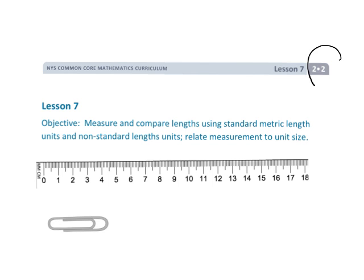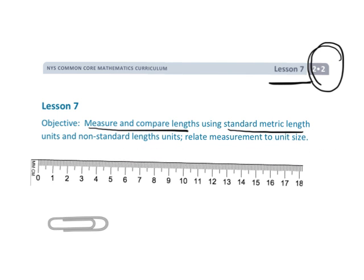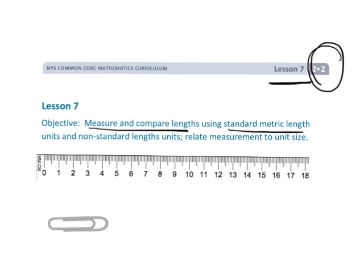All right, this is grade 2, module 2, lesson 7. Students are going to be measuring a variety of things using standard tools like the ruler and non-standard things like a paper clip. That's going to be a cool little thing in this lesson, so let's get started.